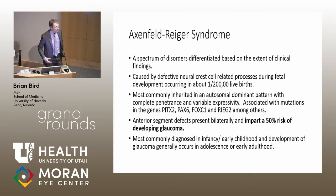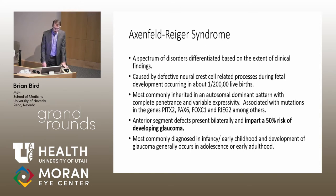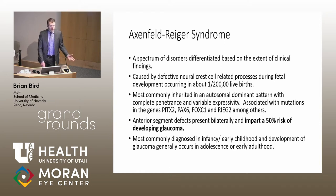Axenfeld anomaly is part of a bigger spectrum of syndromes called Axenfeld-Rieger syndrome. It's a spectrum of disorders differentiated based on the extent of clinical findings. Axenfeld anomaly is the most benign. These are caused by defective neural crest cell-related processes during fetal development. Most commonly inherited in autosomal dominant fashion, related to the genes PITX2, Pax6, FOXC1, and RIG2, among others being studied due to advances in genetic sequencing.